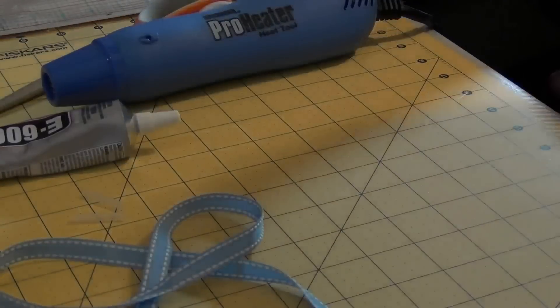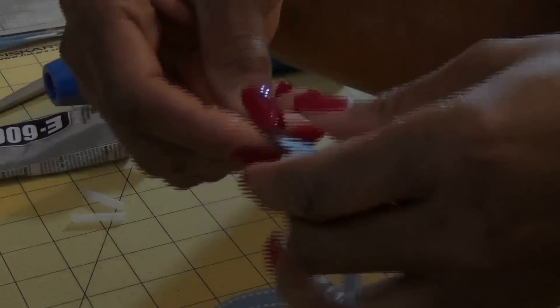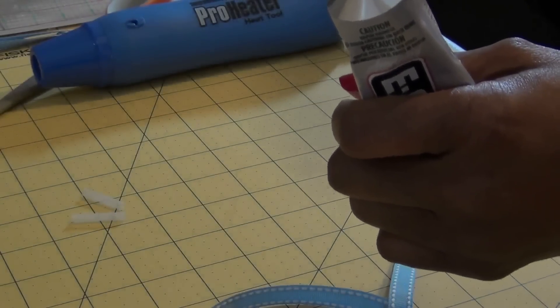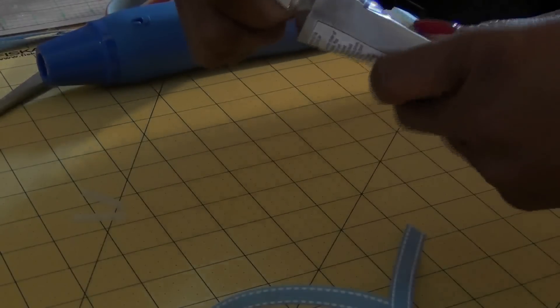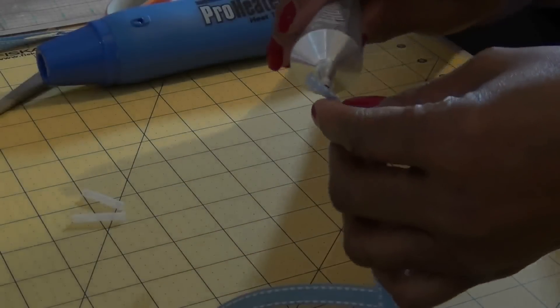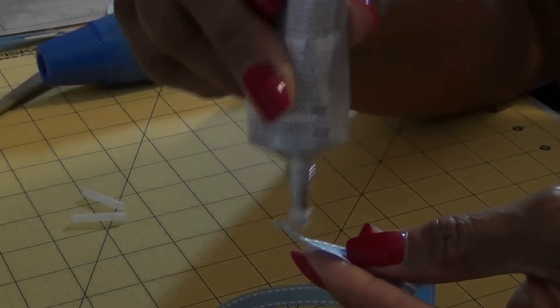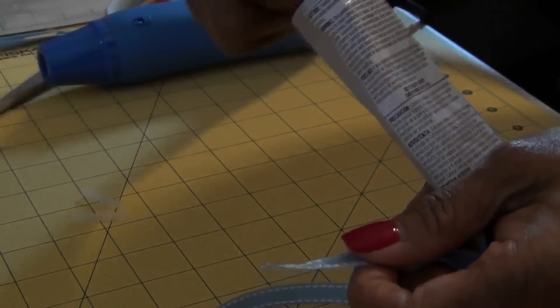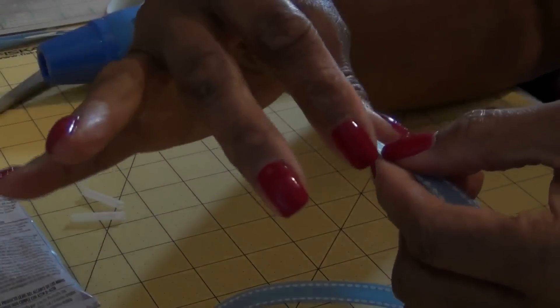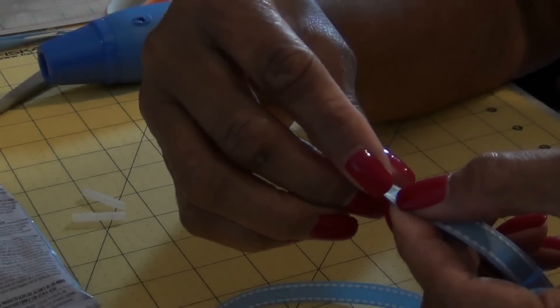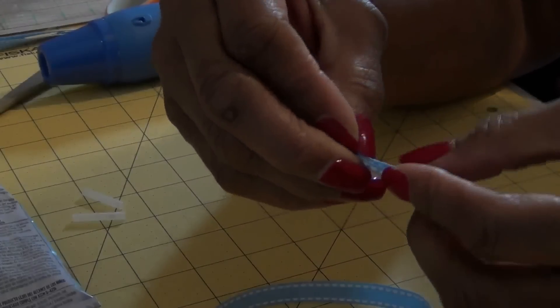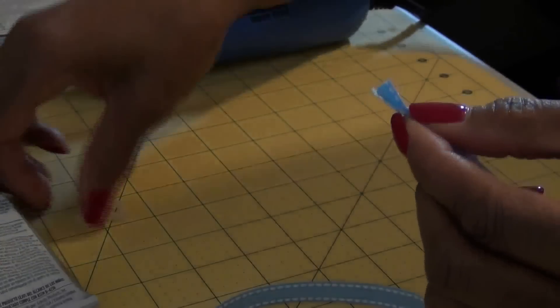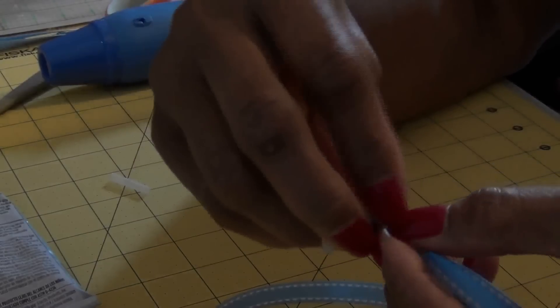Let's get started. We're gonna take the ribbon. I'm just gonna put a little bit of e6000 glue on there, just to try to hold it in place. I want to actually take this and make it round. I'm just gonna squeeze it together like that because I want it to fit inside the tube, so just make it as small as you can.